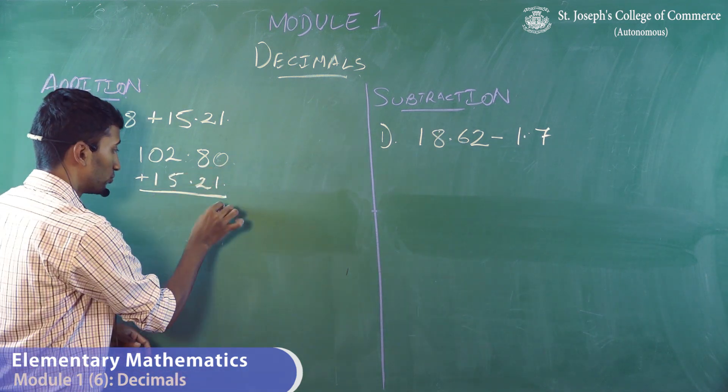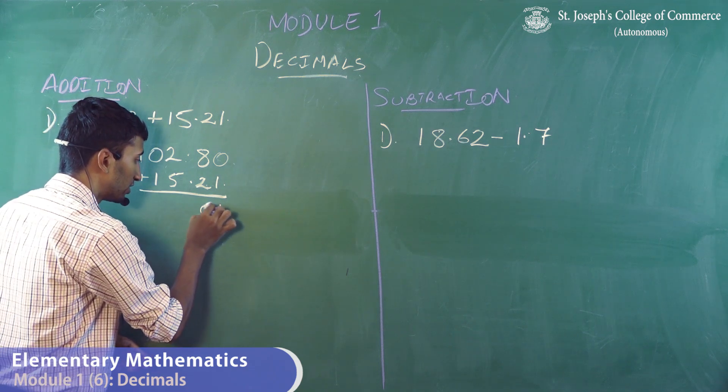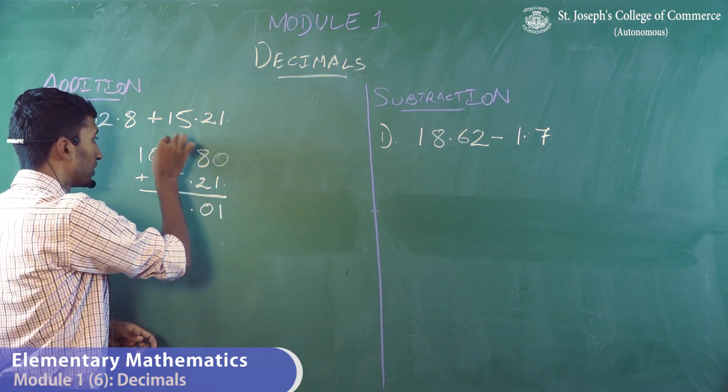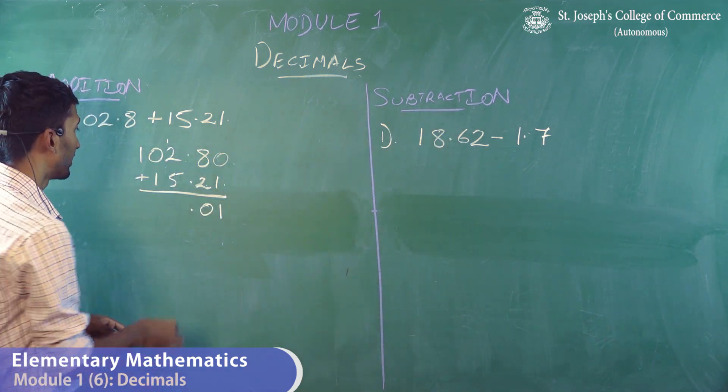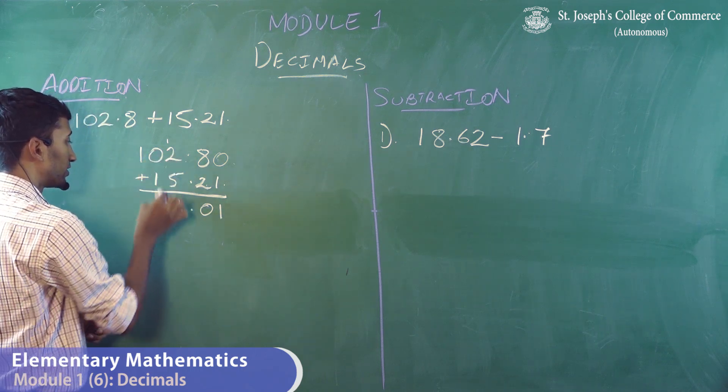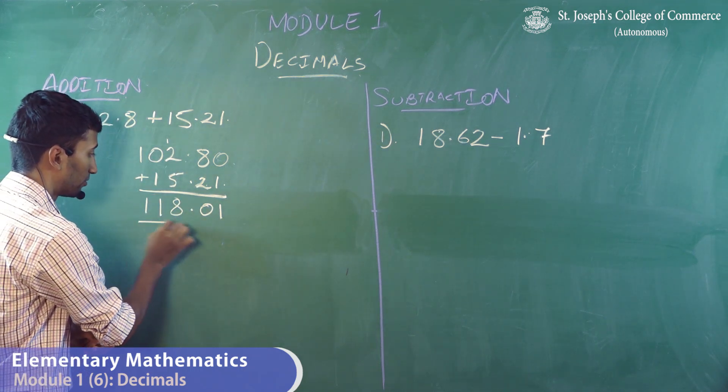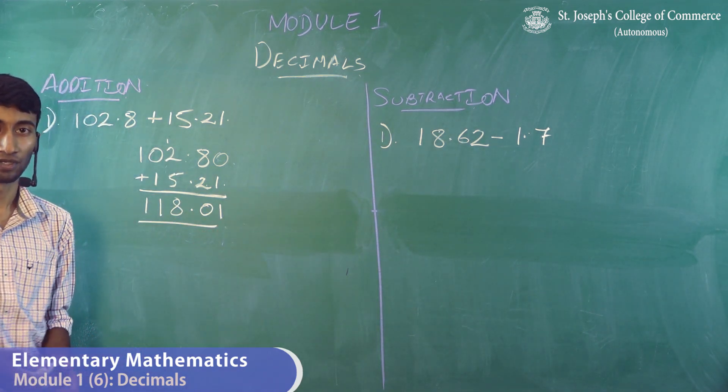0 plus 1 will give you 1. 8 plus 2 will give you 10, 0 and carry 1. 5 plus 2, 7 plus 1, 8. 1 plus 0 will give you 1 and 1 will come down. So, this is your answer for addition.